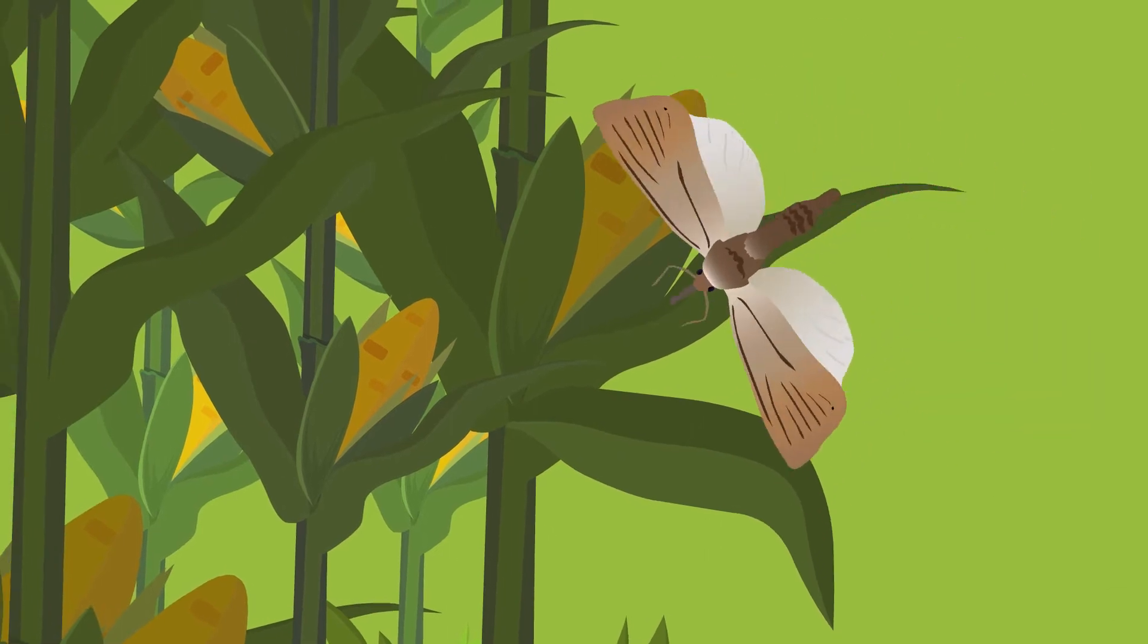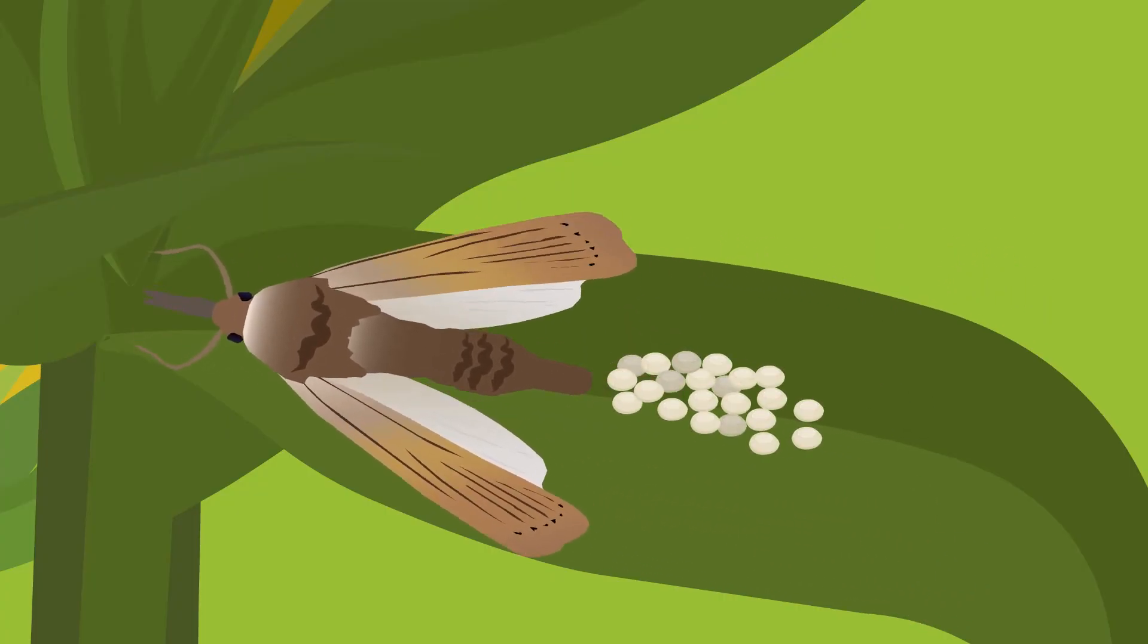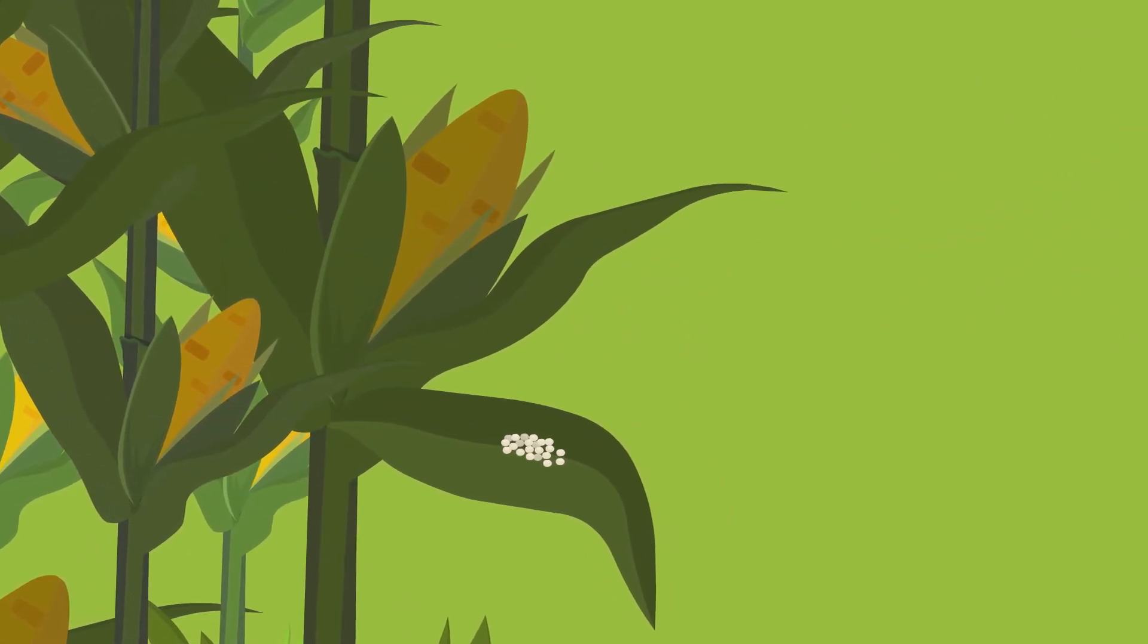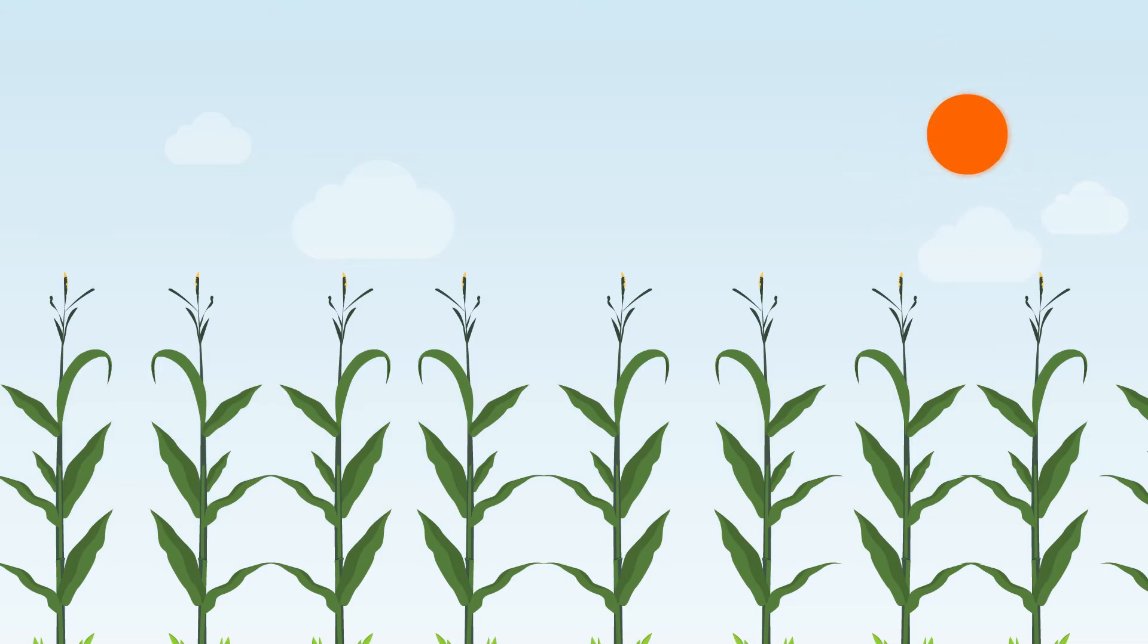Stem borer adults lay their creamy white-colored eggs on the underside of your maize leaves. If you notice any of these eggs on your crops, you may have an infestation.